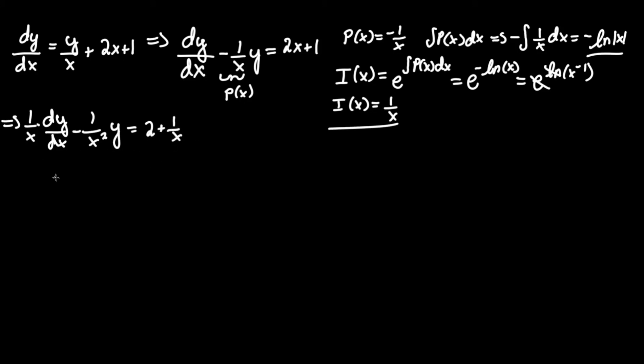Apply the product rule where dy/dx of the integrating factor 1 over x times y equals 2 plus 1 over x. We can prove this is the product rule where you have the derivative of 1 over x times the derivative of y plus the derivative of 1 over x times y.